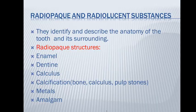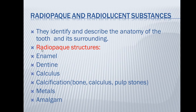Now let's talk about how to differentiate and read a radiograph. There are two key terms: radiopaque and radiolucent. Radiopaque means the substance appears white on the radiograph. Radiolucent means the substance appears dark gray or black.